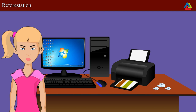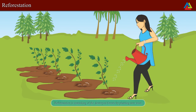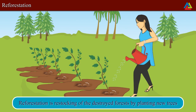Is there any other way we can help save energy and trees? What is the answer to deforestation? The answer to deforestation is reforestation. Reforestation is the restocking of destroyed forests by planting new trees. We should plant at least as many trees as we cut.